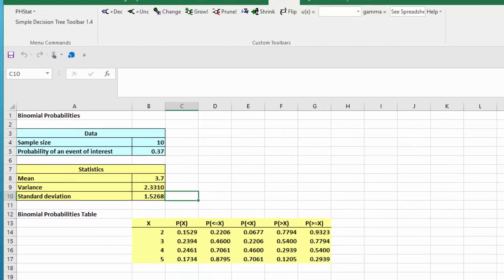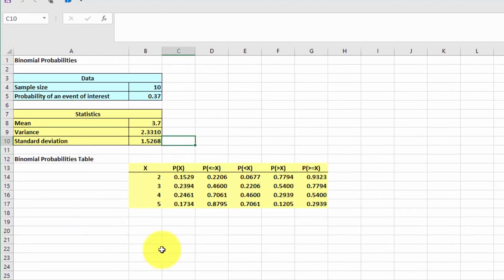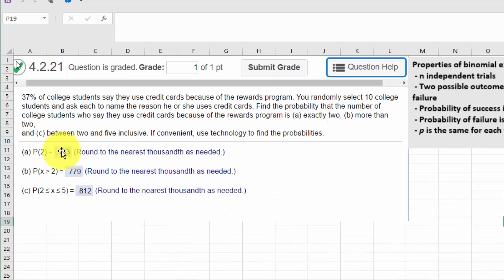And I'm going to drag... Whoops, I'm not going to drag. Go back here to sheet 1. And the answer was 0.153, which is 0.1529 rounded. So that part is correct.